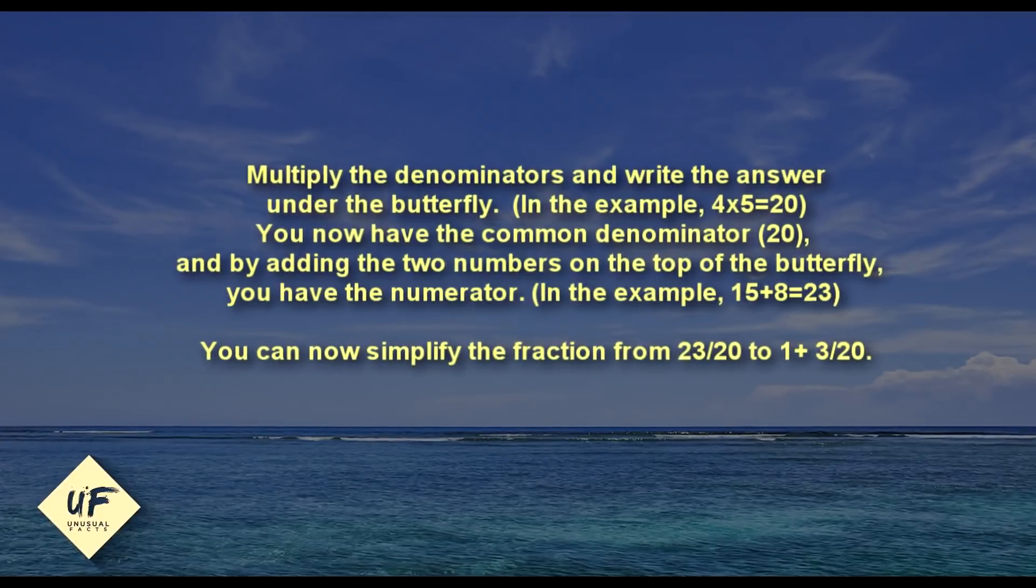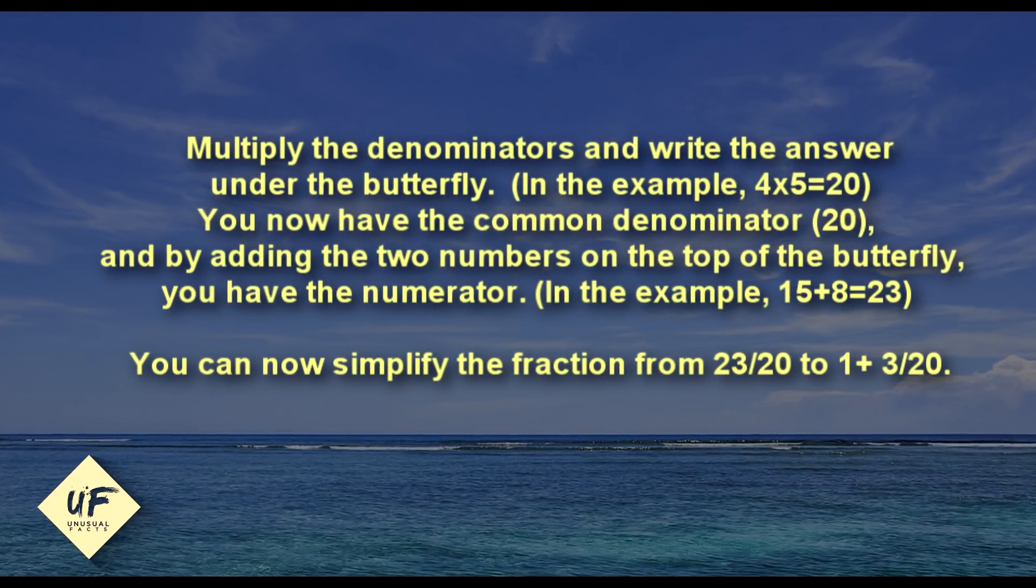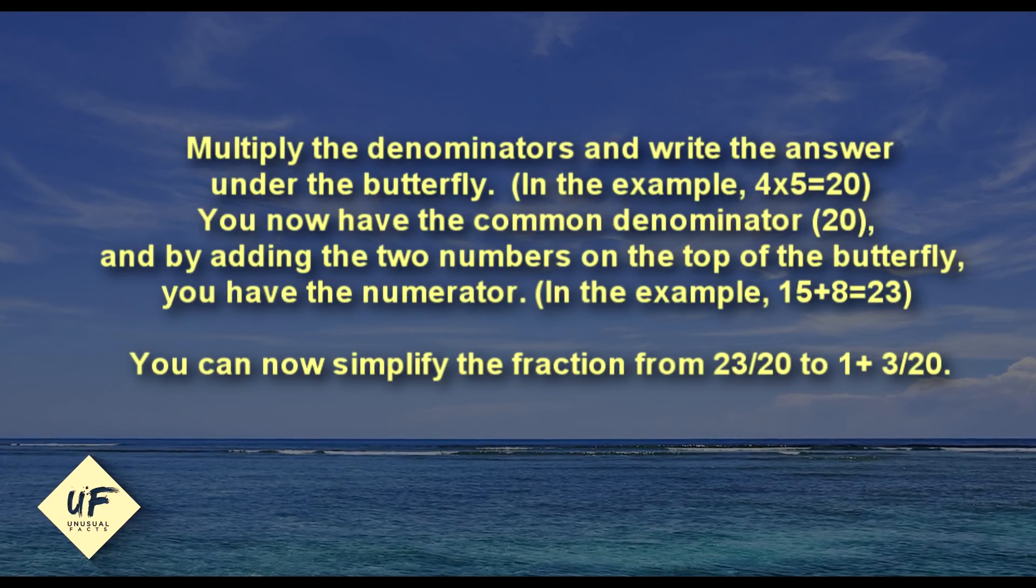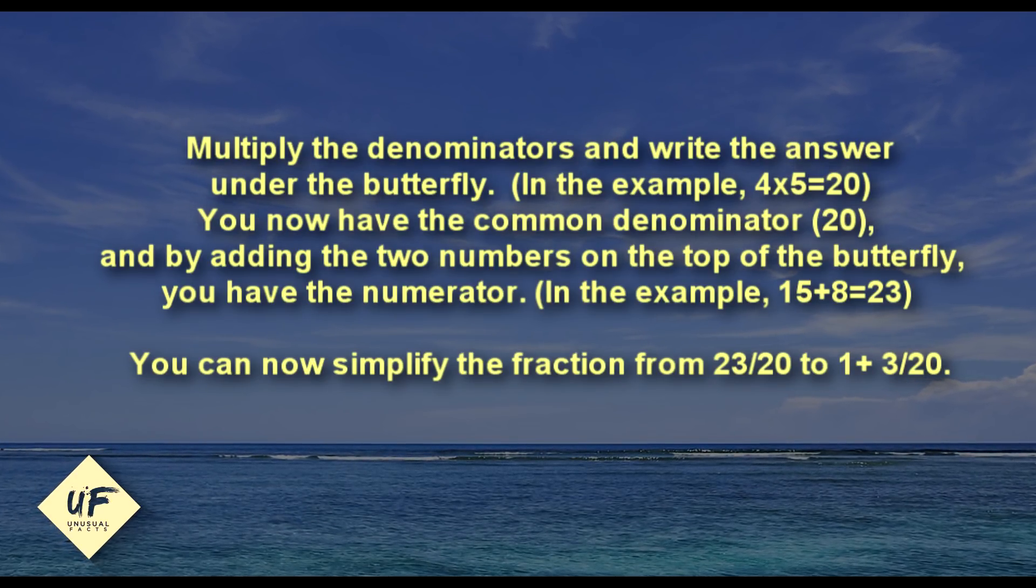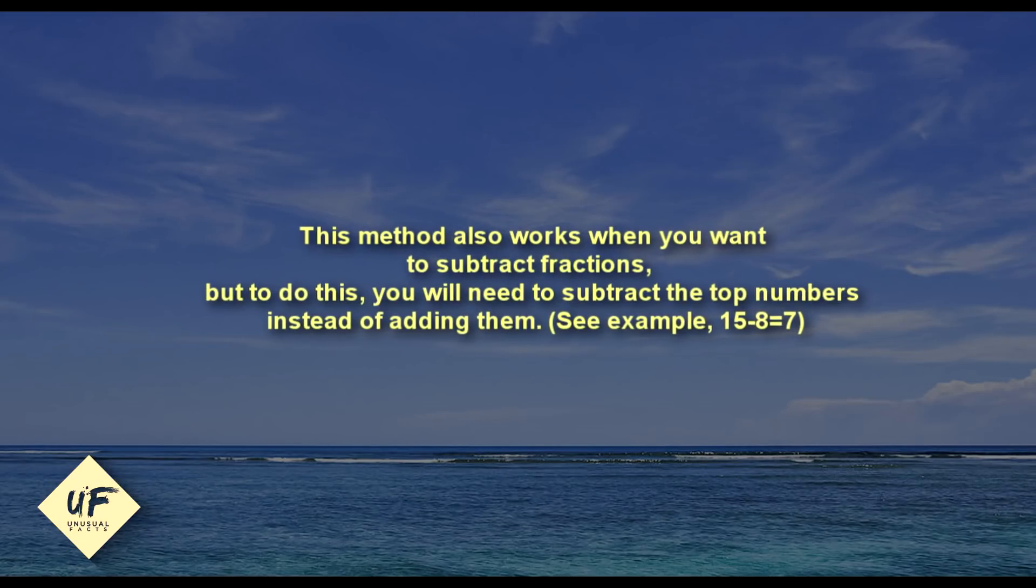Multiply the denominators and write the answer under the butterfly. In the example, 4 times 5 equals 20, so you now have the common denominator 20. By adding the two numbers on top of the butterfly, you have the numerator. In the example, 15 plus 8 equals 23. You can now simplify the fraction from 23/20 to 1 and 3/20.